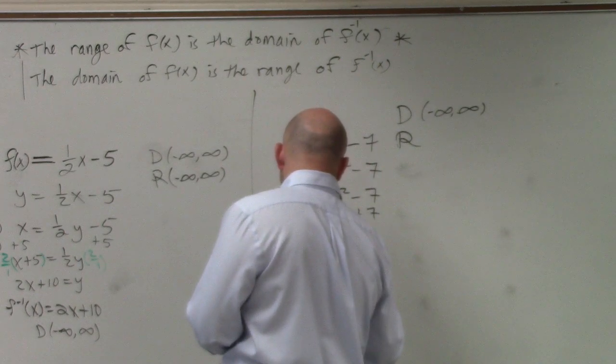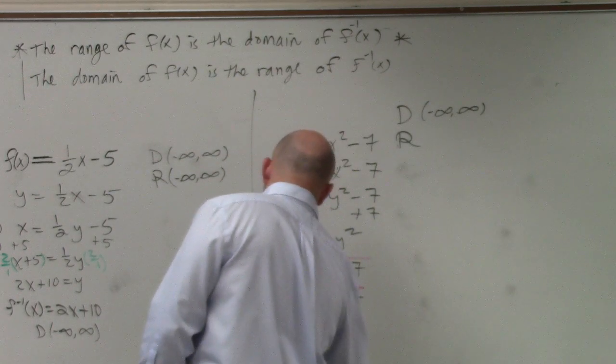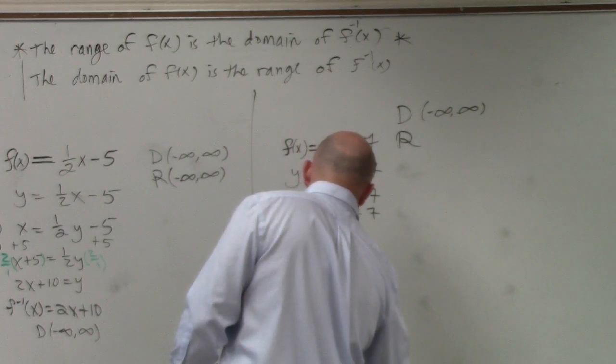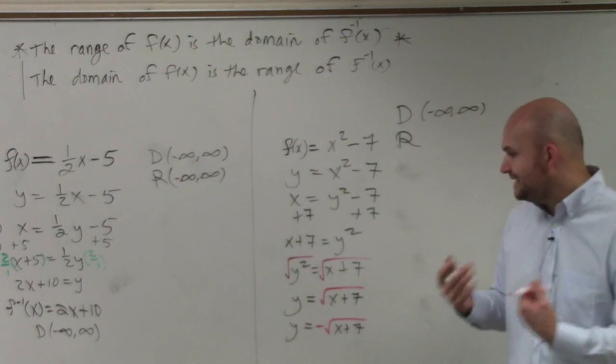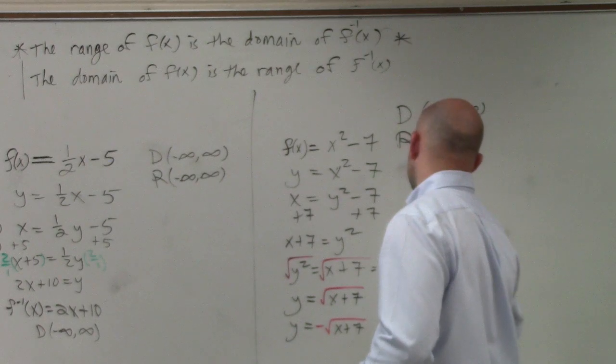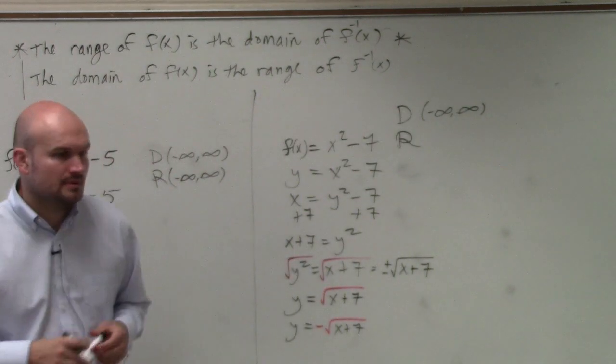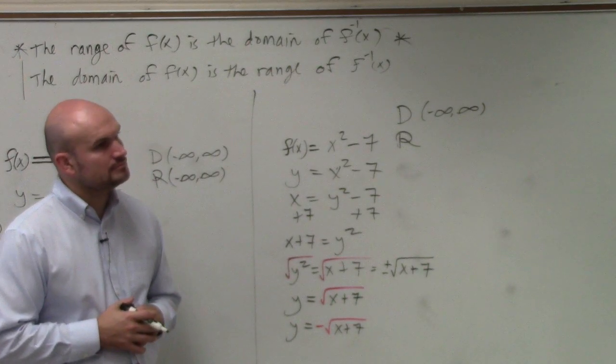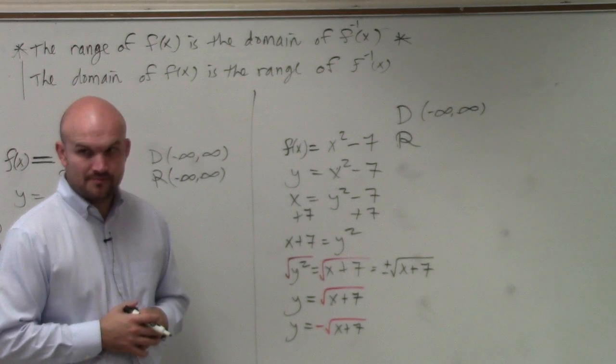So therefore, I'm actually going to have two values: y equals square root of x plus 7, and y equals negative square root of x plus 7. Right? Remember, we introduced the square root. OK? You guys agree with me? Yes? OK.